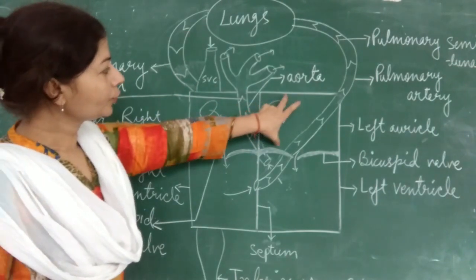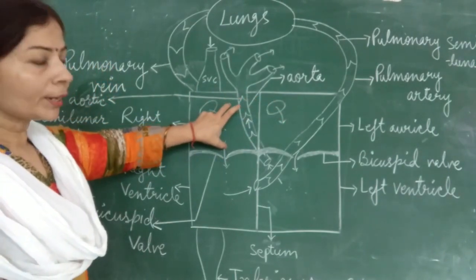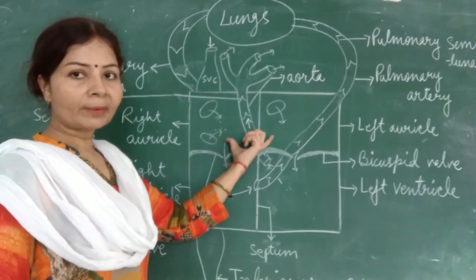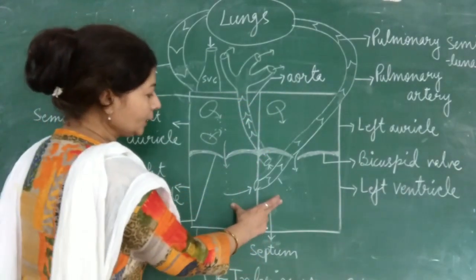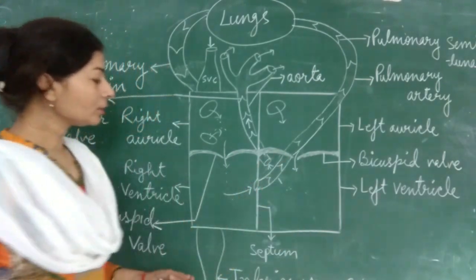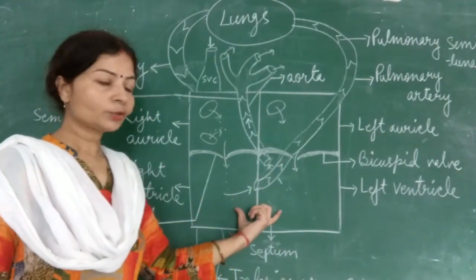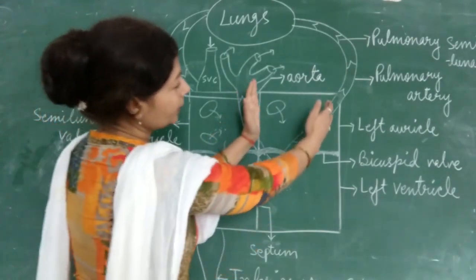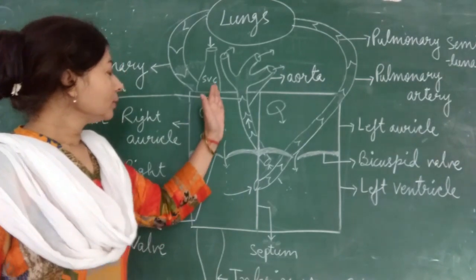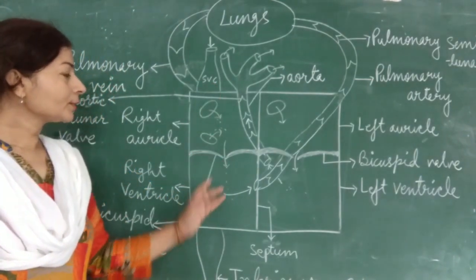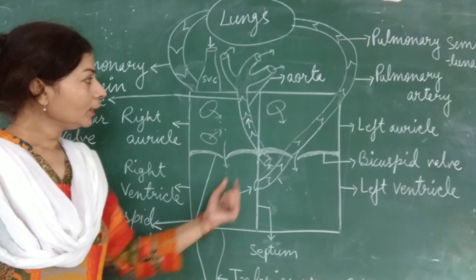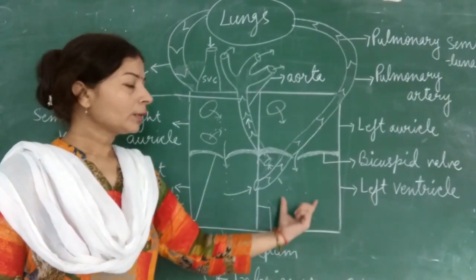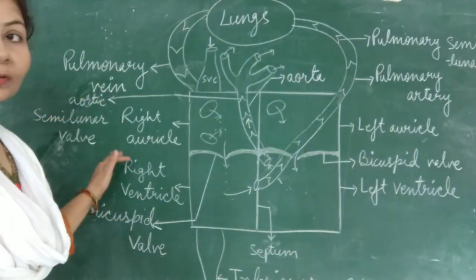These two chambers are called auricles, or receiving chambers of the heart, and these two chambers are called ventricles, or distributing chambers of the heart. This is the right side of the heart and this is the left side of the heart. The right side of the heart contains deoxygenated blood and the left side of the heart contains oxygenated blood. Now let's move to the parts of the heart.